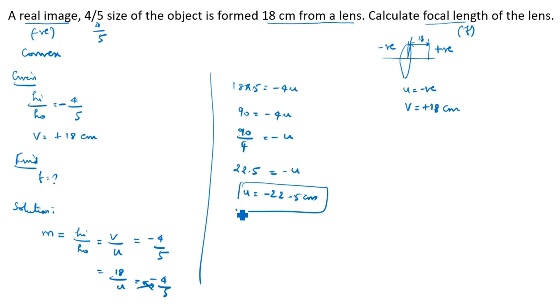After that, what we need to find? Focal length, right? So what is the formula for focal length? 1/f is equal to 1/v minus 1/u. What is v value? V value is given as 18, plus 18. So 1/18. U value is 22.5, minus 22.5. 1 divided by minus 22.5.